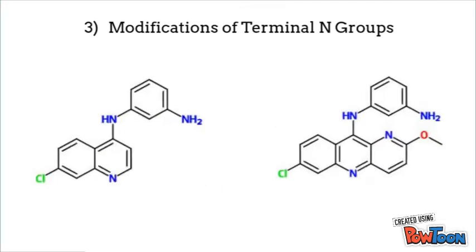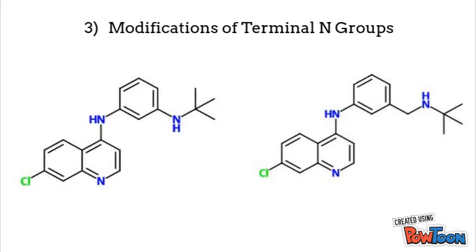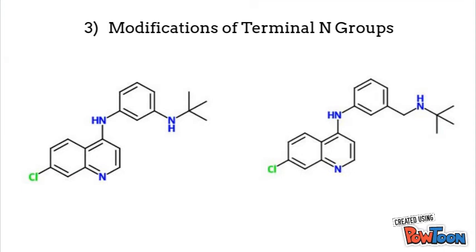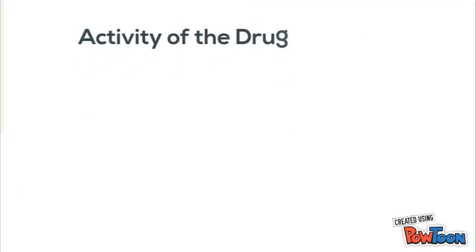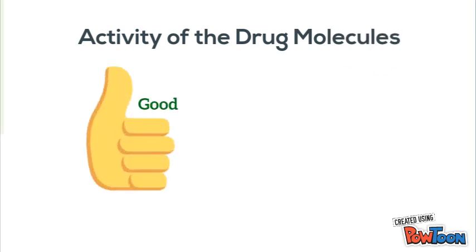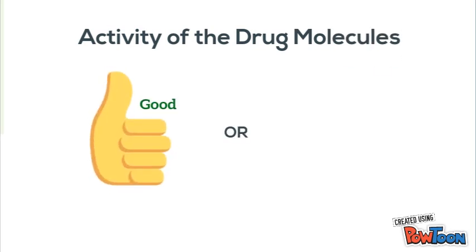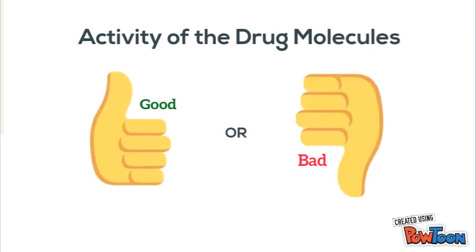And the last one is by using different terminal N groups. All of these modifications that we've done are to see whether they can increase the activity of the drug molecule.